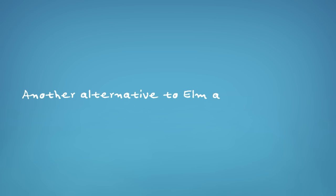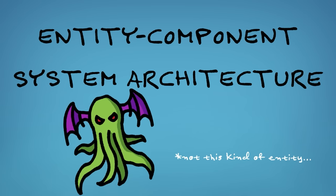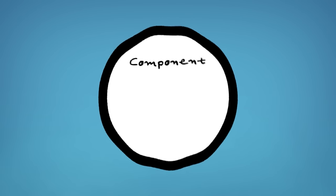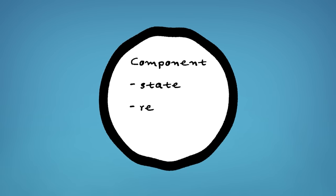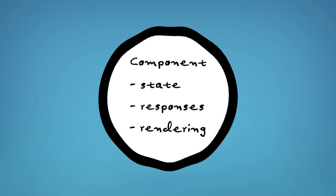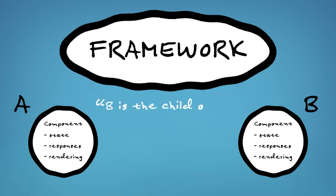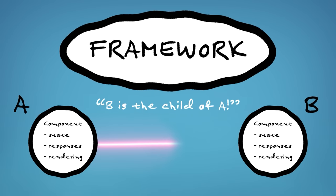Another alternative to the Elm architecture is something called the Entity Component System architecture. The framework owns all of the components. Components are responsible for their own state, responding to user input, and rendering onto the screen, but the framework is responsible for storing the relationships and interactions between all the components. For Rust, the framework is the single owner of all the components. This is actually the approach that worked the best for us at Warp.